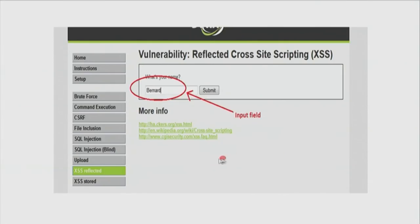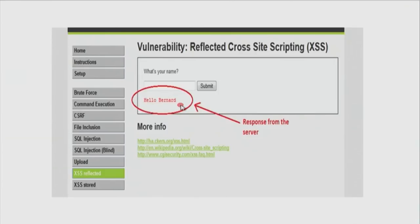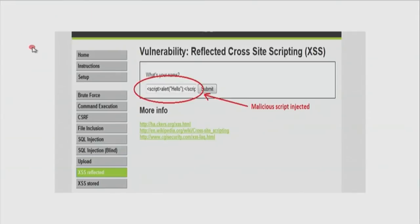Here is a simple example: this web page asked for my name, I typed in my name and it reflected it back — saying 'Hello Bernard.' Now, instead of typing my name, I type something like: script alert hello. This goes to the server end, and the server says 'Hello [this thing].' It doesn't look to see whether the string is a valid name — it just thinks this string is alphanumeric and reflects it back.